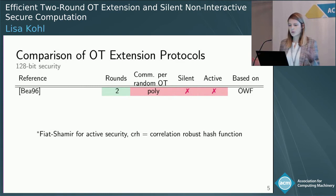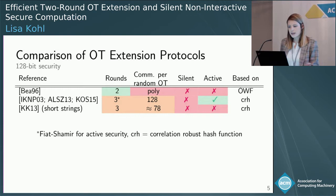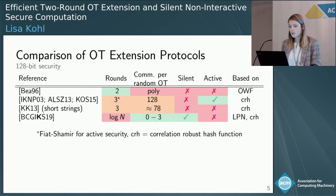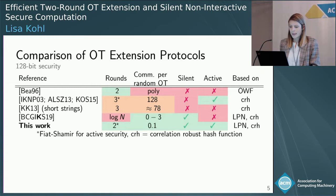What is the state of the art in OT extension protocols? The first protocol was merely a feasibility result — not practically efficient, but with a minimal number of rounds: just two rounds, one message from receiver Alice to sender, and one message back. The state-of-the-art practical protocol started with IKNP in 2003, which is computationally very efficient but has 128 bits of communication per random OT and needs one more round. In recent work, we significantly reduced communication to only zero to three bits — sub-linear in the number of OTs — with the silent feature.